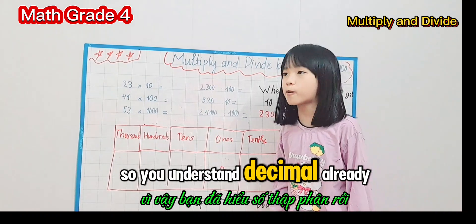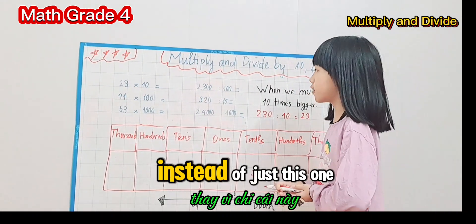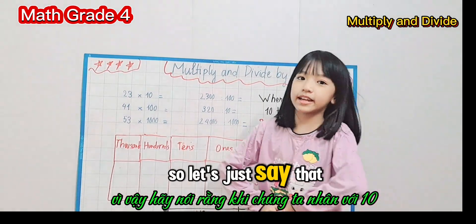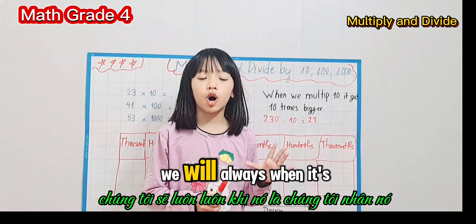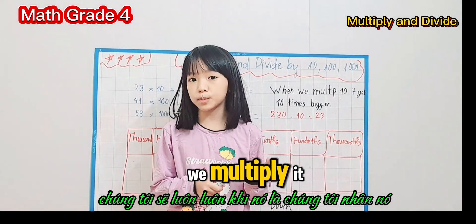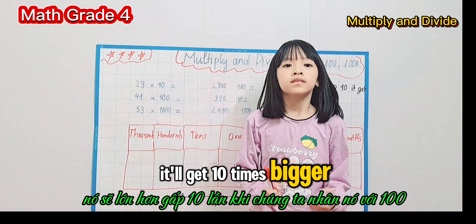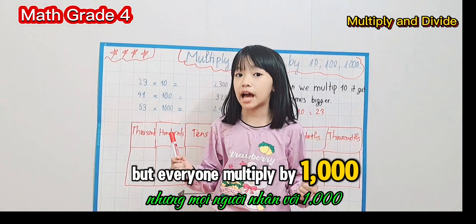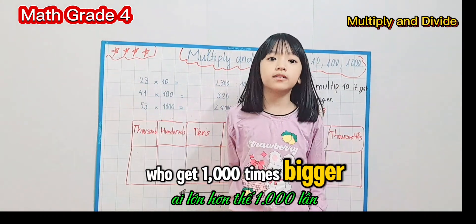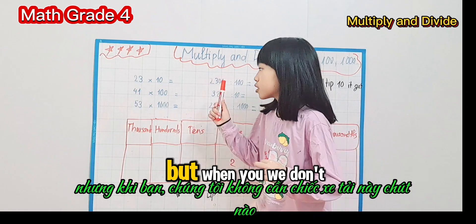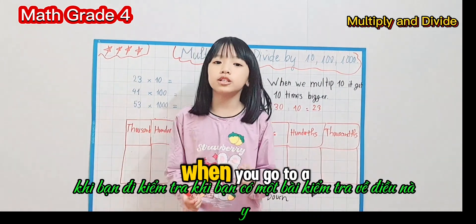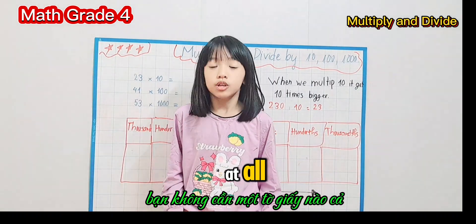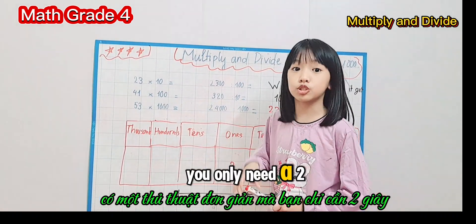Let's do a quick summary. When we multiply by 10, the number gets 10 times bigger. When we multiply by 100, it gets 100 times bigger. When we multiply by 1000, it gets 1000 times bigger. And here's the good news — when you go to a test about this, you don't need a chart at all. There's a simple trick that only takes you one or two seconds.